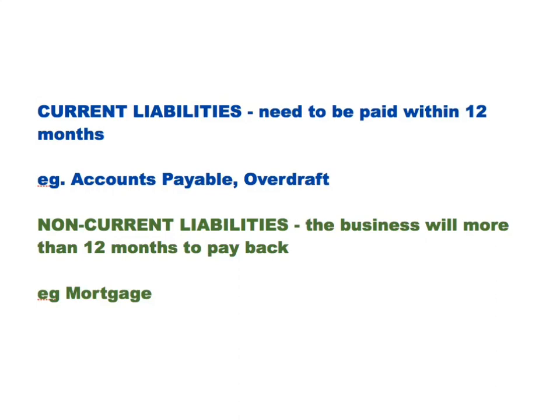A non-current liability is one that goes over a longer term — more than 12 months to pay it back. A good example of this is a mortgage.